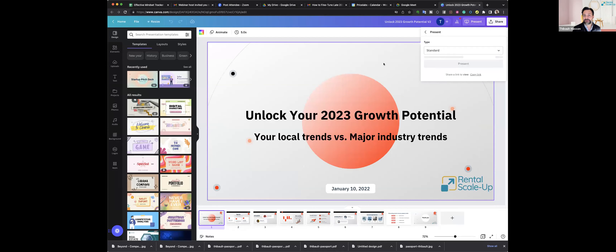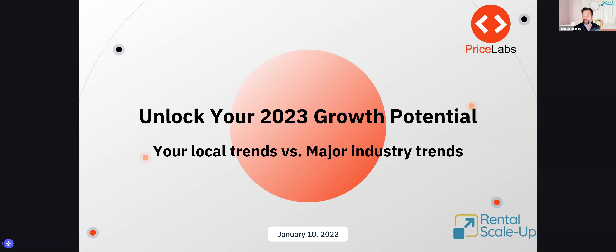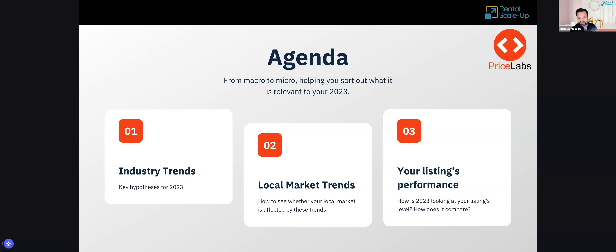Can you all see my screen? Good. Welcome to 'Unlock Your 2023 Growth Potential.' Our approach is to be very actionable — we'll look at the big industry trends hitting our industry this year, then look at how these trends may be affecting your local market, and then see how industry and local trends are affecting your own listings' performance. We go from big to small — macro to micro.